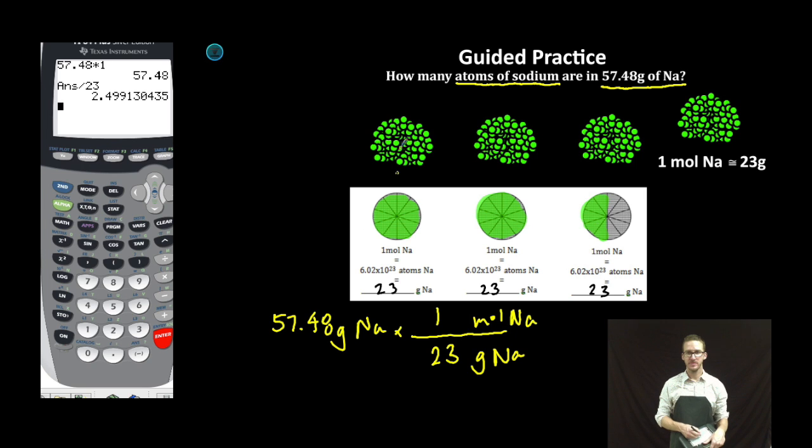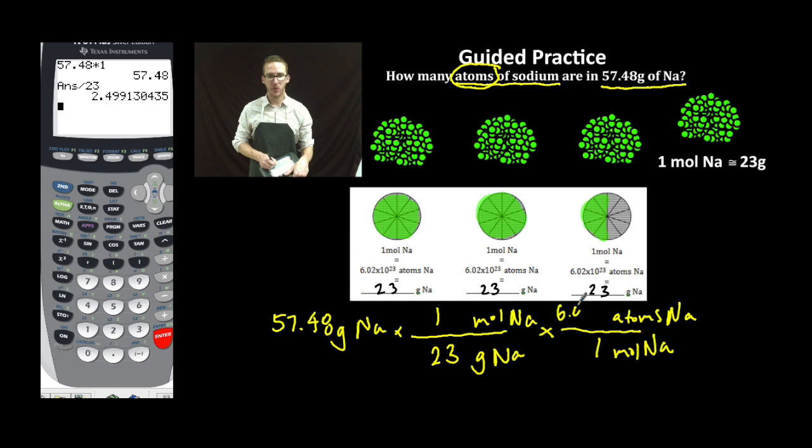But I need to keep going because read your question carefully here. We're asked to solve for atoms. So one more step in my conversion factor. This time moles on the bottom, atoms on top. One mole of sodium, 6.02 times 10 to the 23.